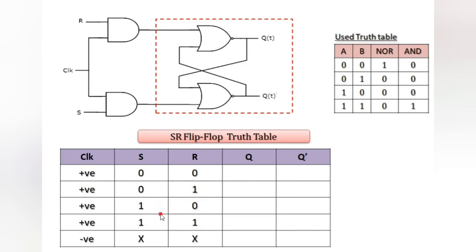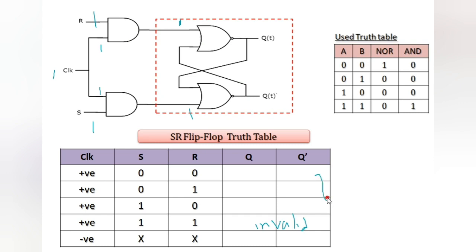The last condition: clock = 1, S = 1, R = 1. With 1 applied to both AND gate inputs, both result in 1. SR latch with inputs 1 and 1 is the invalid condition. So when S = 1 and R = 1, the output is invalid. All these conditions are the same as SR latch, but here the activation of the circuit depends on the clock pulse applied.